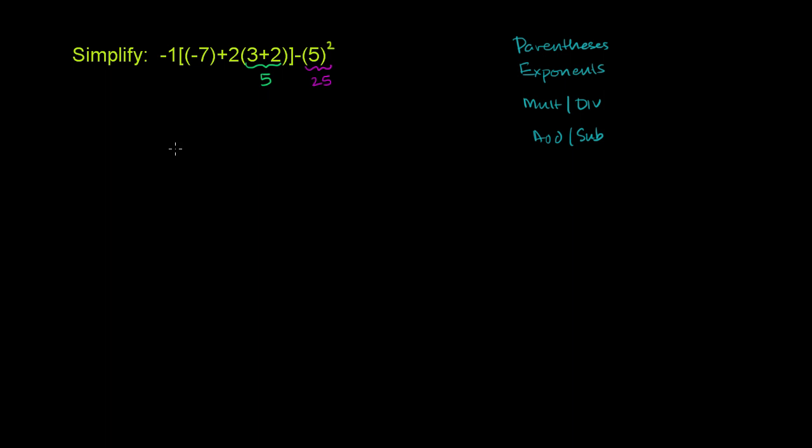And so let's not do too many steps at once. So this whole thing will simplify to negative 1. And then in brackets, we have negative 7 plus 2 times 5. And then close brackets, minus 25.